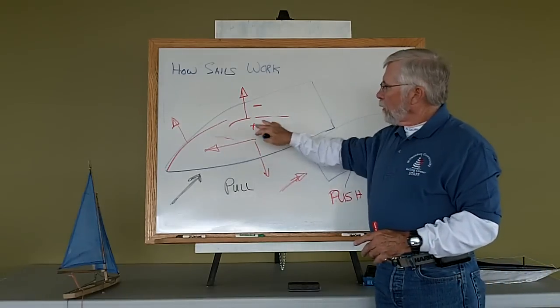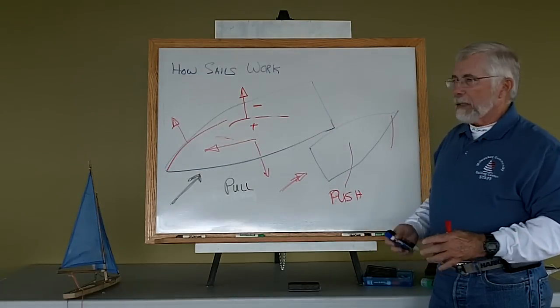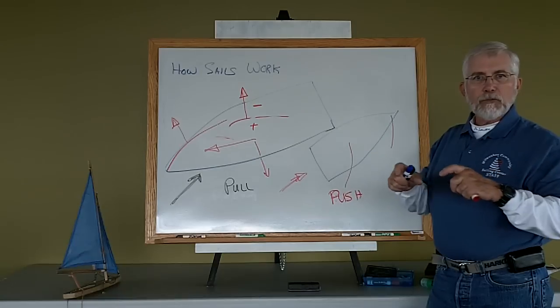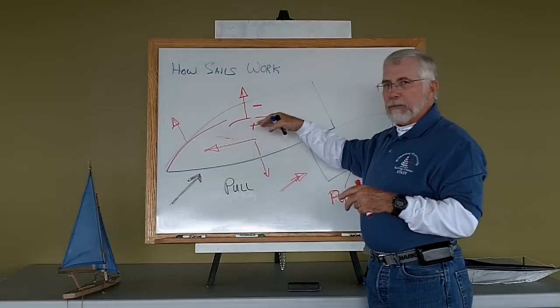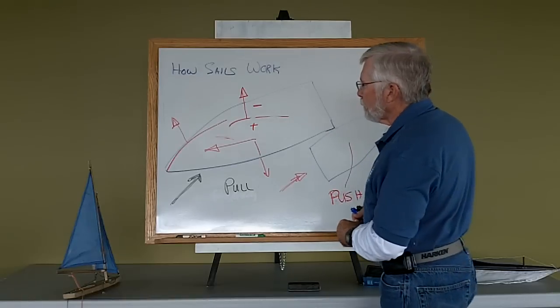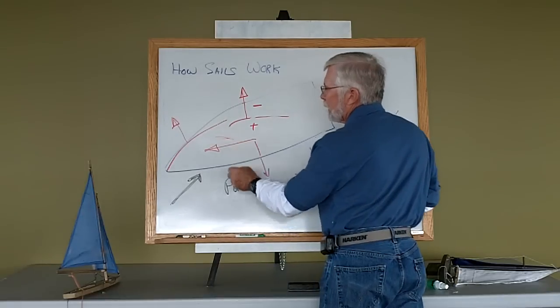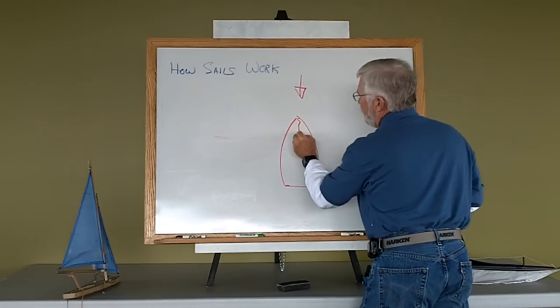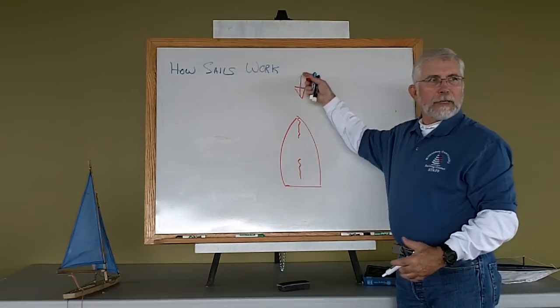One of the things that we need to think about in our pull mode is that, unlike the airplane, I don't have a rigid structure that's holding my sail shape. It's made of cloth, in most cases Dacron, and can collapse on me. So it's important to realize that I actually can't sail directly into the wind.